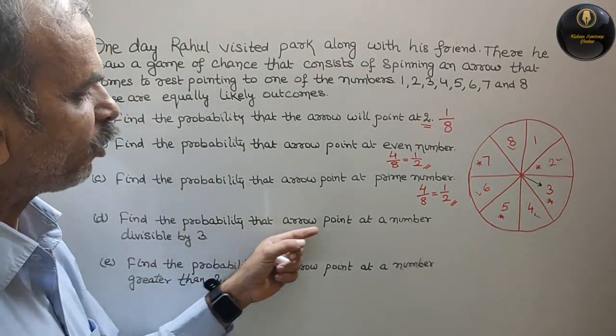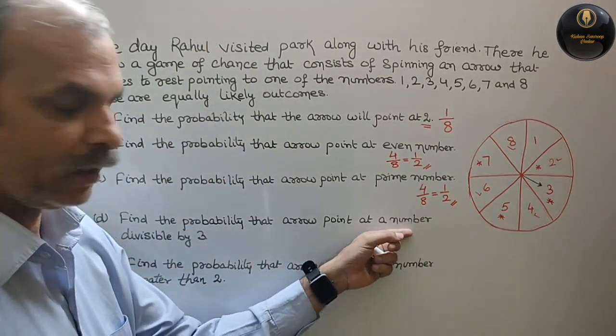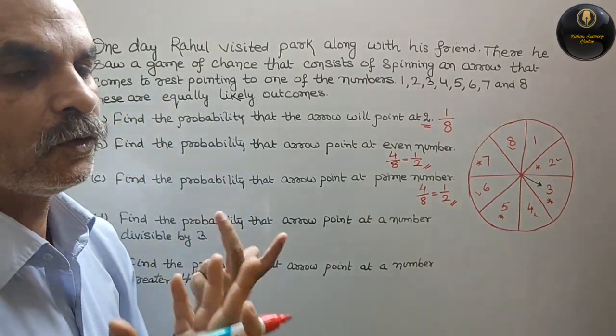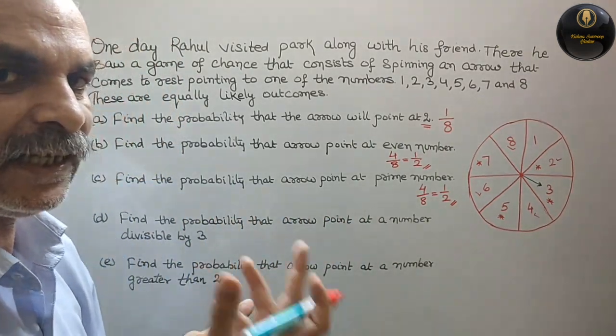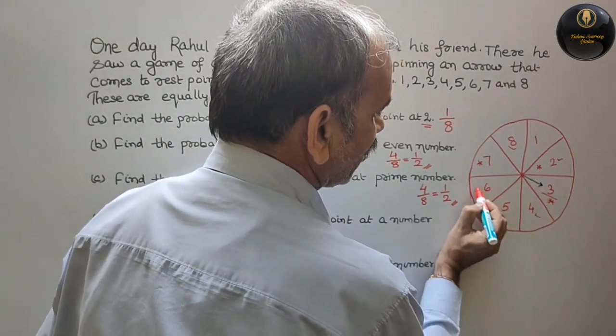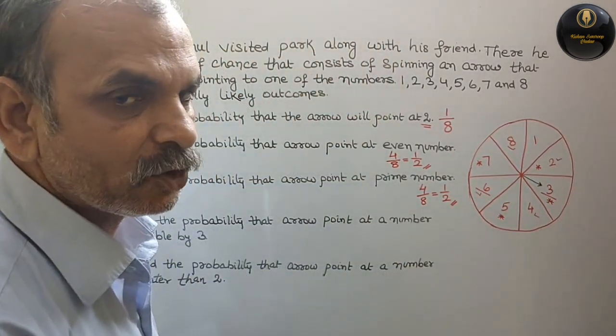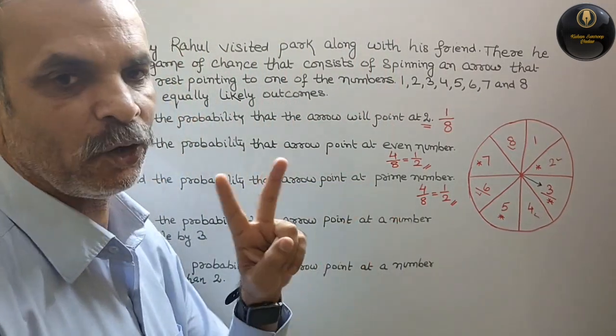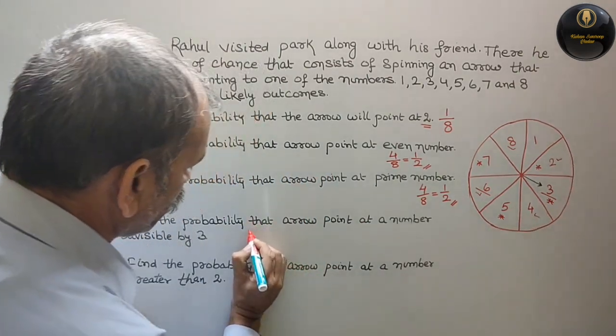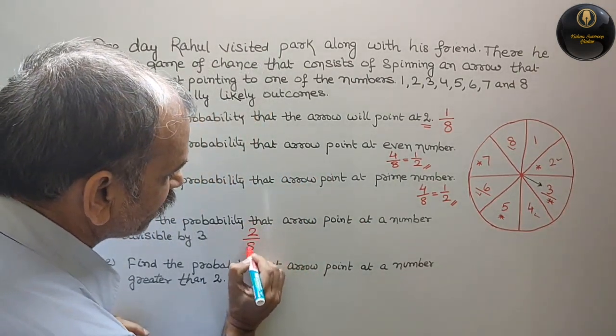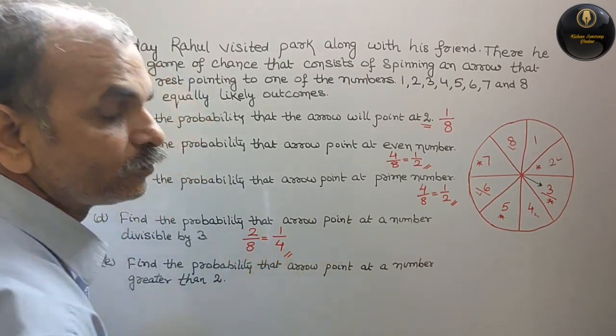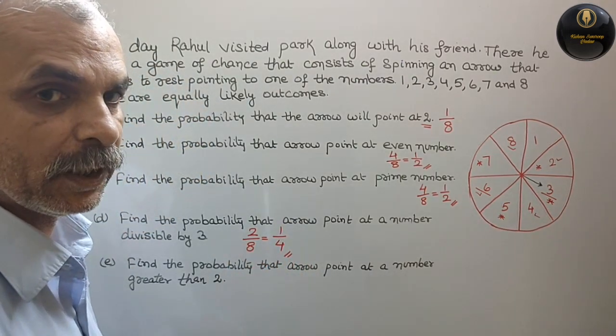Next. Find the probability that arrow points at a number divisible by 3. Which numbers are divisible by 3? 3 and 6. So how many? Only 2 numbers. So 2 by 8. Reduce this, you will get 1 by 4.